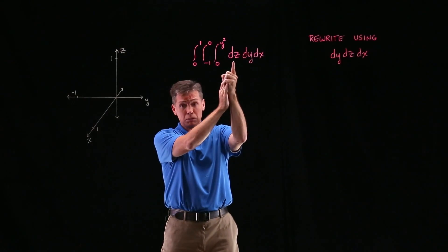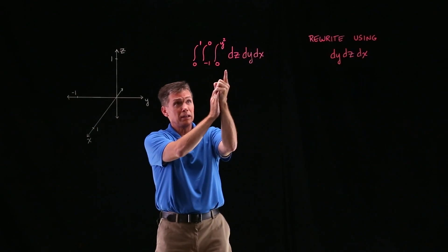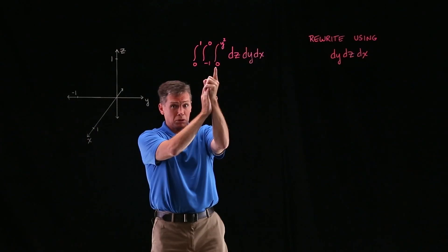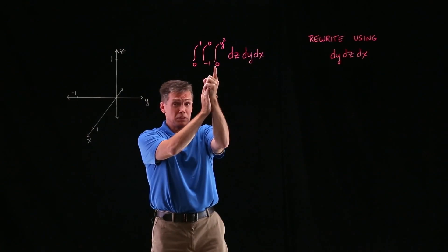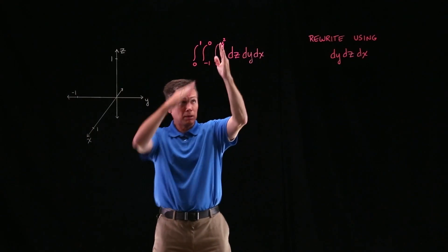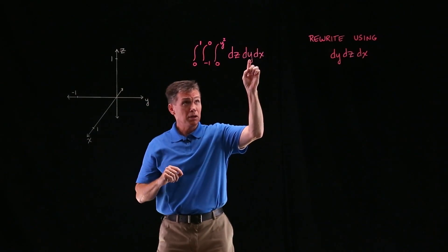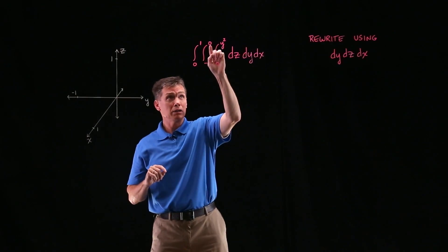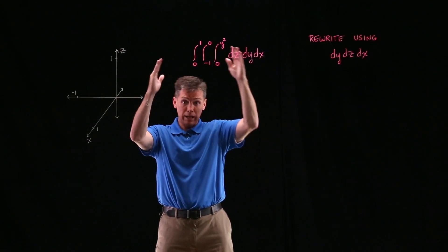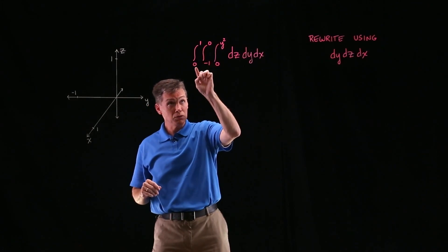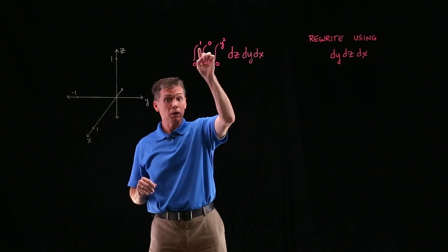So my z variable corresponds to that innermost integration symbol. In terms of limits of integration, z is going to go from 0 to y squared. Take a step out, and the y variable is going to go no lower than negative 1 and no higher than 0. And your last step out is the x variable will go no lower than 0 and no higher than 1.